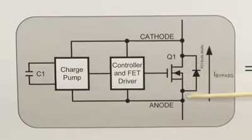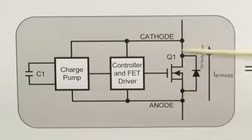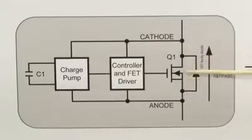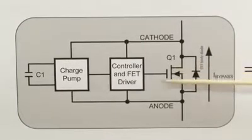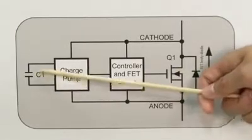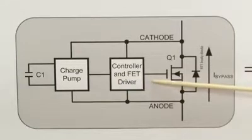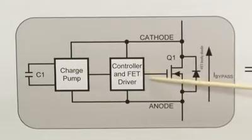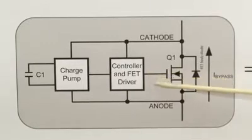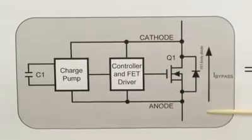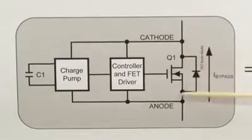Once the MOSFET is on, it creates a low voltage drop across anode and cathode. This voltage drop will be limited by the RDS on of the MOSFET. During this time, the capacitor is the one providing the power for the controller and the FET driver. Once the energy in the capacitor has been depleted, the controller will turn off the FET and the current will flow back into the body diode and the cycle repeats itself.